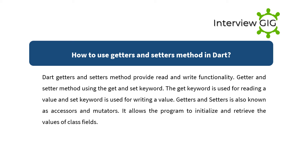How to use getters and setters in Dart? Dart getters and setters provide read and write functionality using the get and set keywords. The get keyword is used for reading a value and the set keyword for writing a value. Getters and setters are also known as accessors and mutators, and allow the program to initialize and retrieve values of class fields.